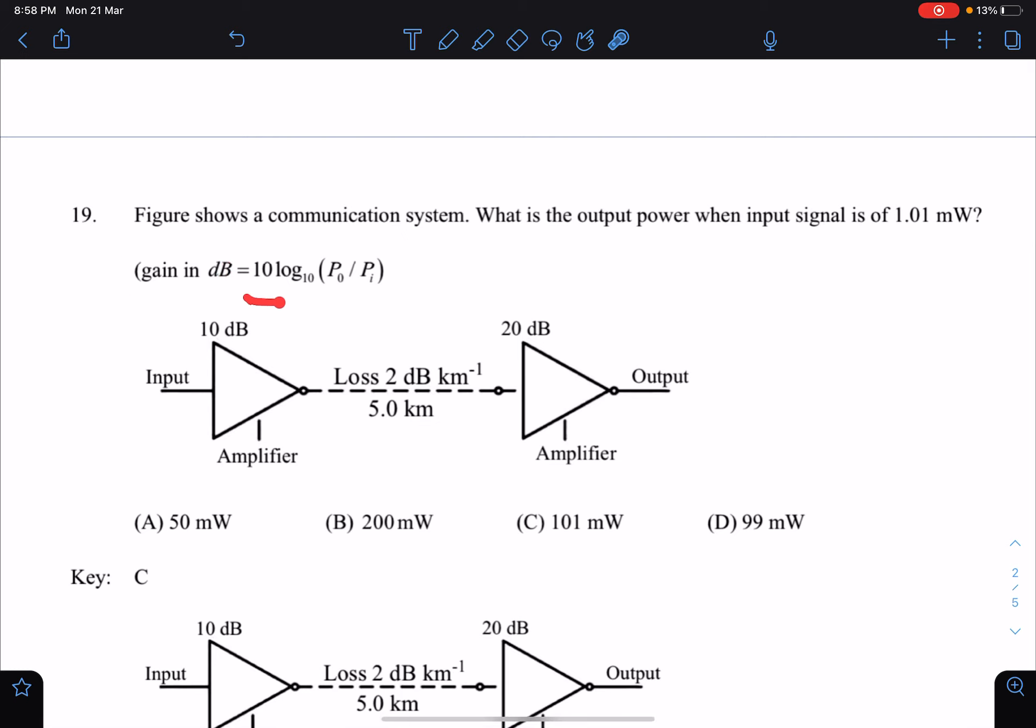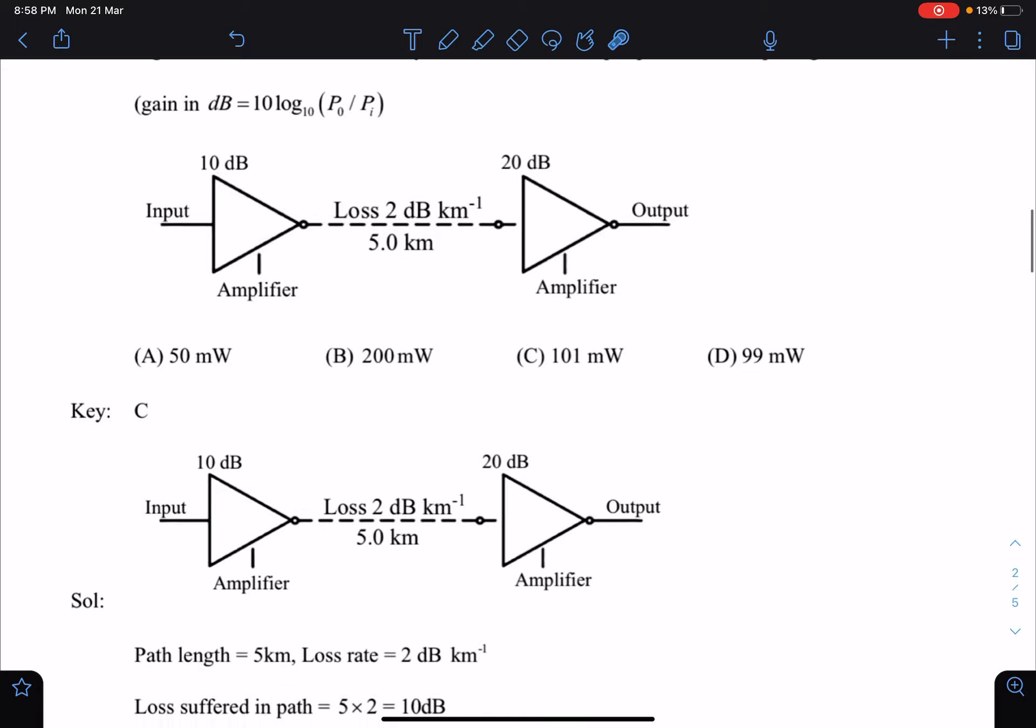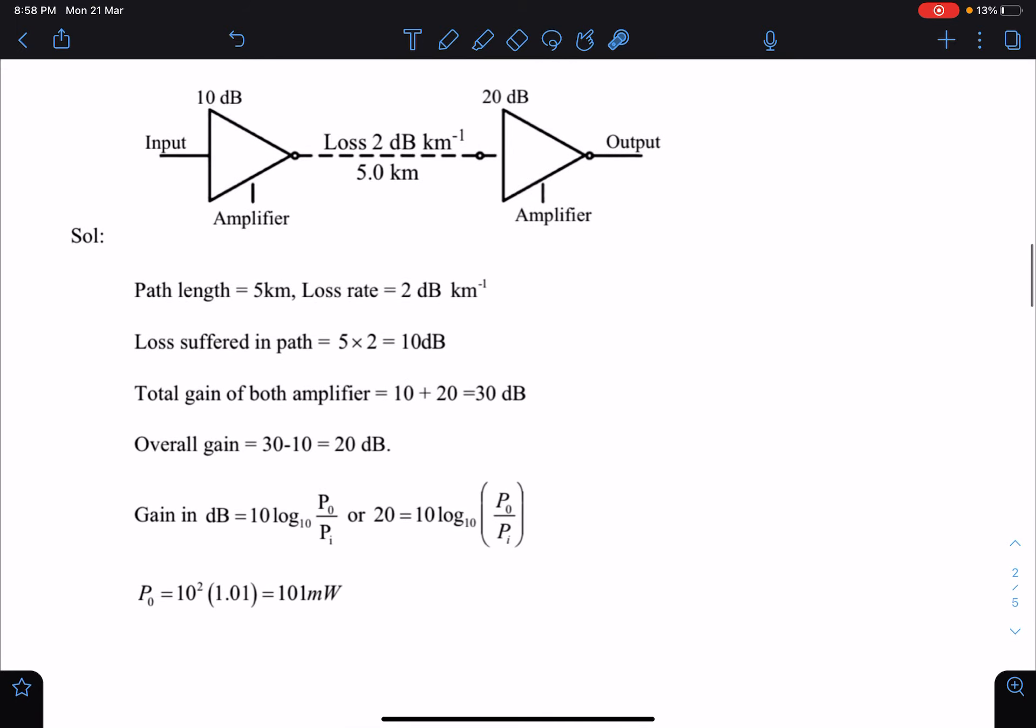I'll just substitute here. 20 decibel = 10 log₁₀(P_out/Pᵢ). So P_out will become 10² (because this becomes 2, and base 10 is given, so 10 squared). P_out becomes 100 times power input, and power input value is given to us.